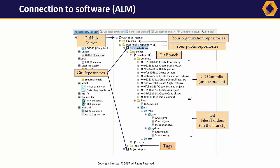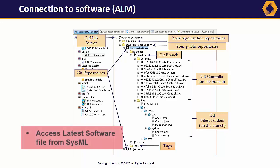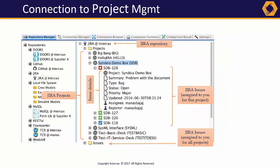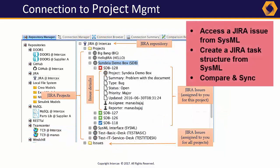A Cyndia link to a version-managed file in GitHub helps coordinate software and hardware during system development. Additional links to Jira issues can bring project management to the system's development. A work breakdown structure in SysML can be mapped to a task structure in Jira, tracking status, schedule, and personnel.